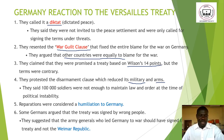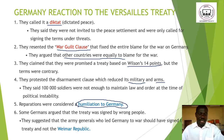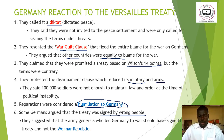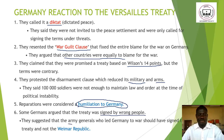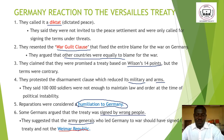Germany also protested the reparations they were asked to pay, seeing them as a humiliation — how could they pay such a huge sum of money? Furthermore, some Germans argued that the treaty was signed by the wrong people — not the army generals who fought on the battlefront, but the Weimar Republic politicians. They suggested the treaty should have been signed by those who were actually in the war.